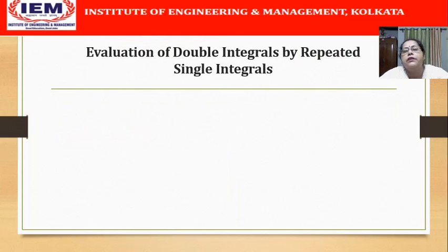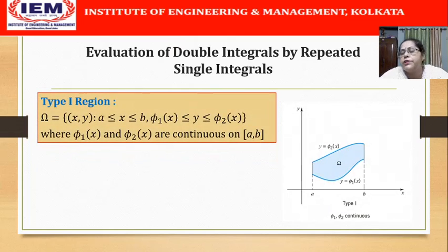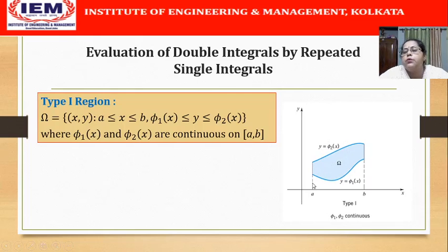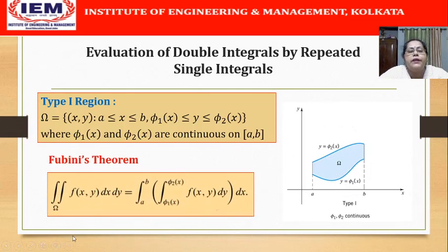This arbitrary region is usually classified into two types. The first one is called the Type 1 region. Suppose we have a non-rectangular region where the domain omega is bounded by a lower curve y = φ₁(x) and an upper curve y = φ₂(x), with x = a on the left and x = b on the right. So this Type 1 region omega consists of points (x, y) where x varies from a to b and y varies from φ₁(x) to φ₂(x), where φ₁(x) and φ₂(x) are continuous functions on [a, b]. If we have a region like this, then Fubini's theorem tells that the double integral of f(x, y) dxdy over omega can be evaluated accordingly.